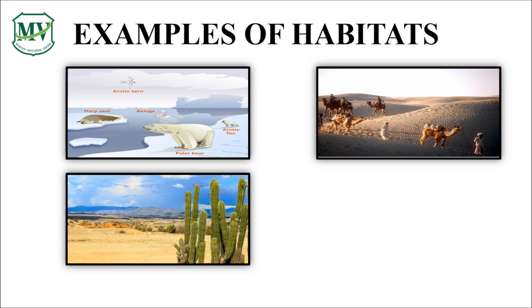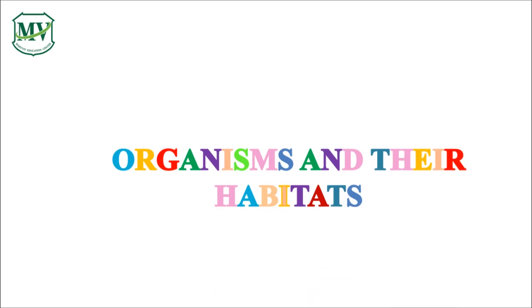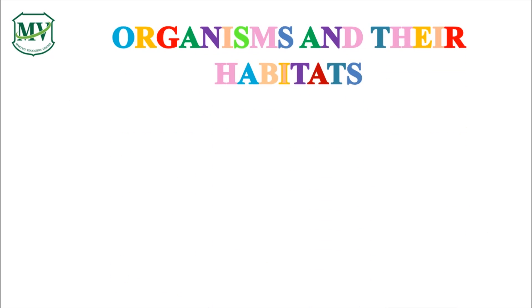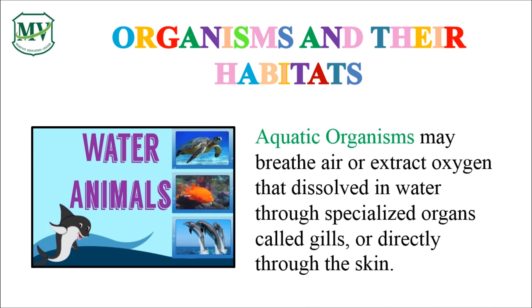How about the cactus plant? How are they adapted to their environment? How about the water lilies? The examples above show aquatic organisms. These organisms live in the water for most of their lifetime. Can you give two examples of aquatic organisms?